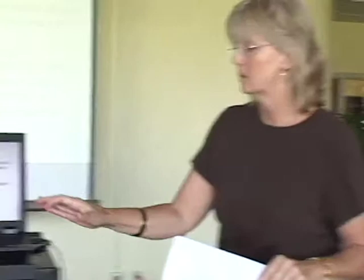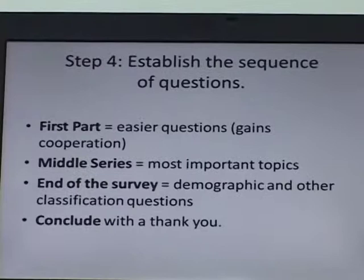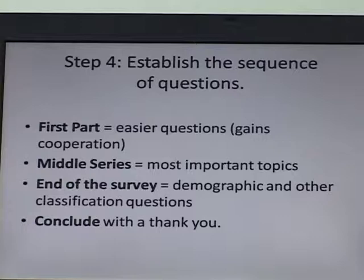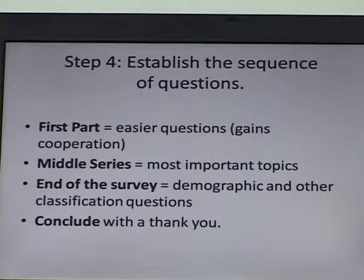Sequence of the questions: always start with your easiest questions first — that gets people going, they feel good about it, and they're more apt to finish the survey without having to think hard right off the bat. In the middle series, that's where your important questions go — the ones you really want to find out information on, because now they're in survey mindset. At the end of the survey, if you want demographic information, put it there. And then always say thank you at the end, to thank them for their time and effort.